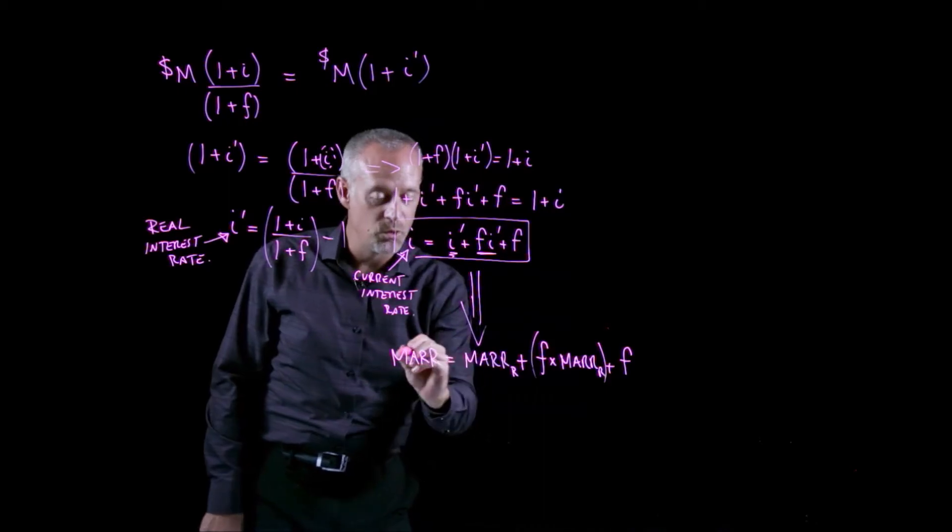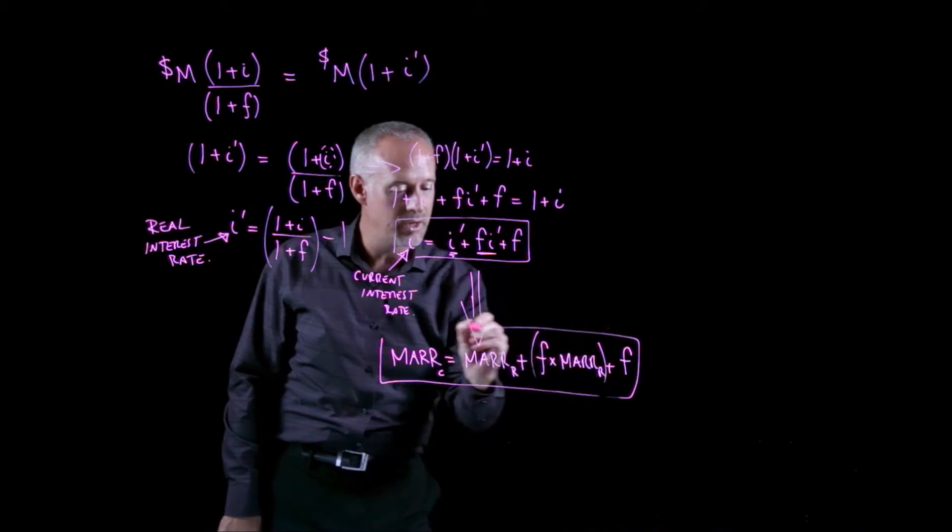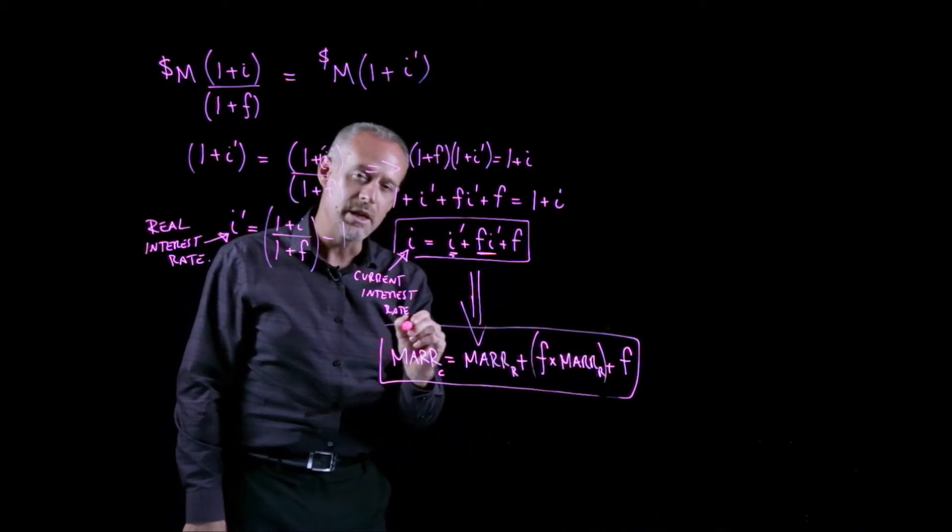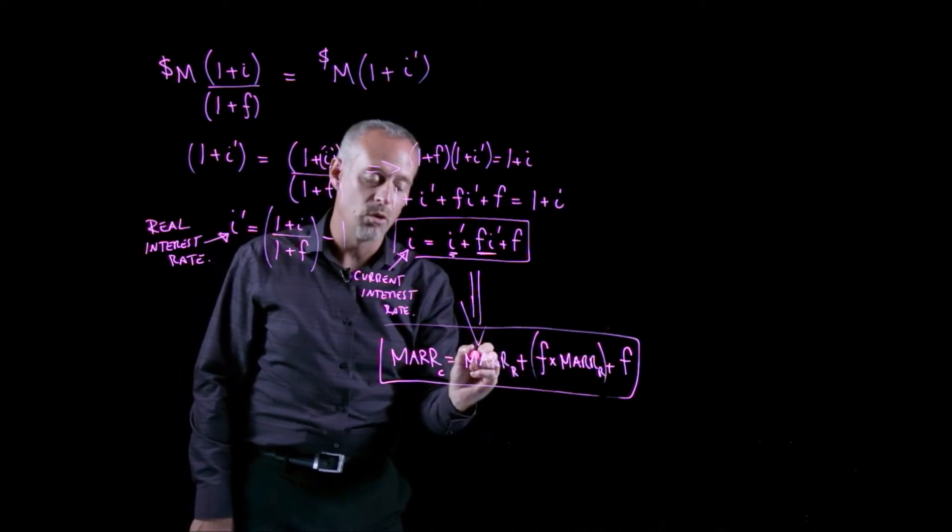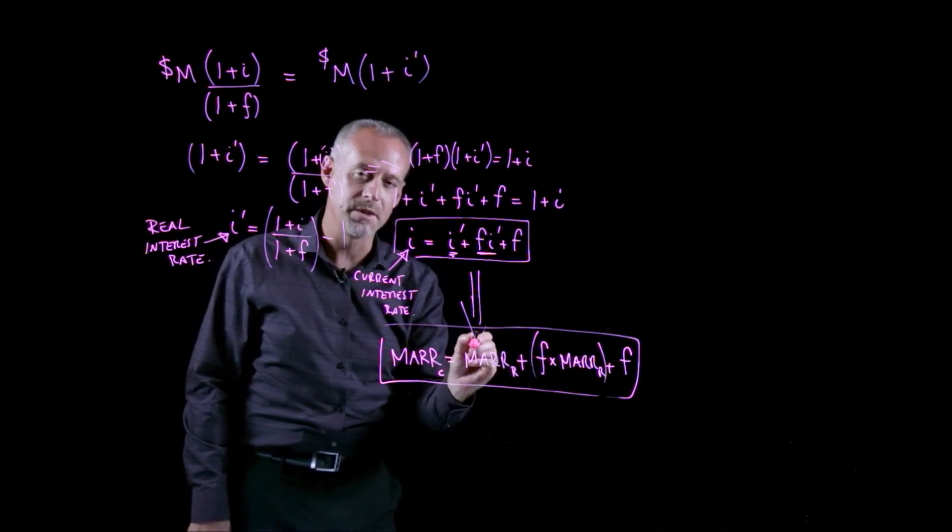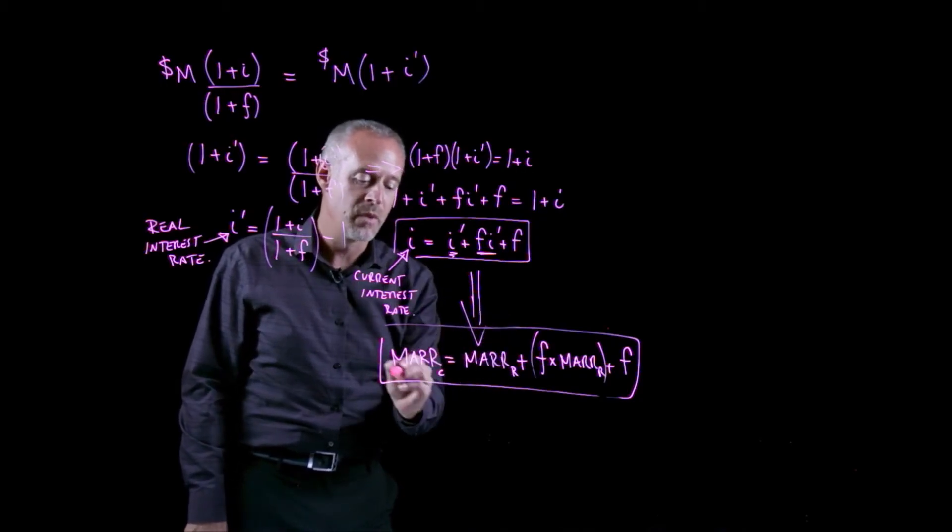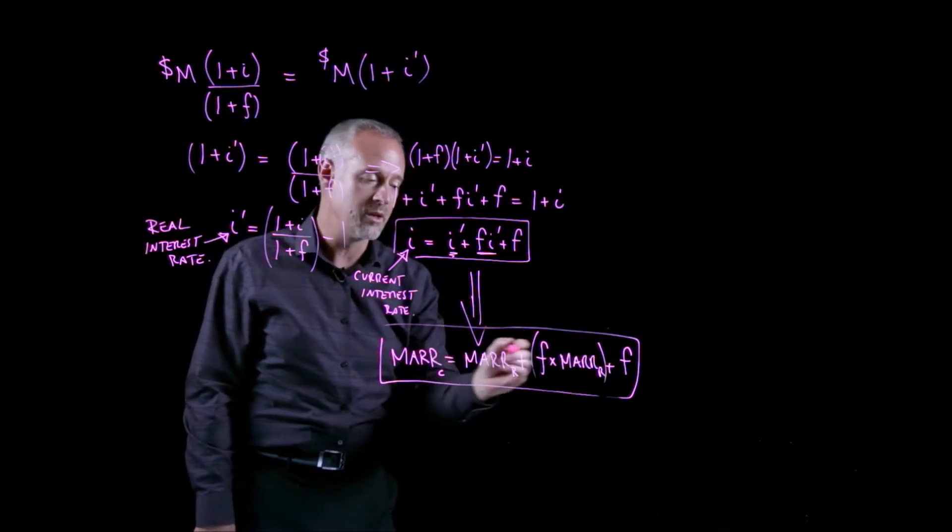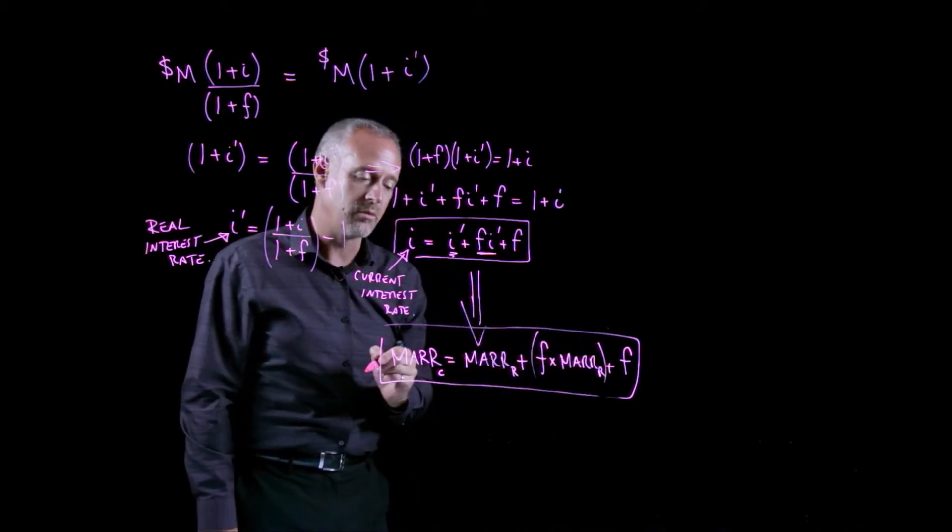And this we'll call the current MARR. I can now apply this formula in problems where I'm interested in finding the company's real MARR, or in problems where I'm trying to decide whether or not I should undertake a project. I can then come back and say, well, what's the current MARR, and then what's the MARR as it relates to what I estimate the value of inflation to be in order to calculate a real MARR?